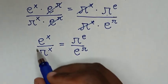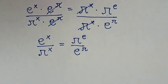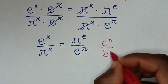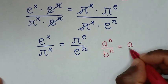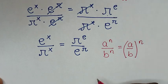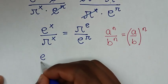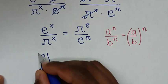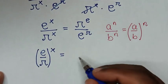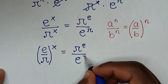In the next step, since e^x and π^x have the same power x, we apply the exponential rule: a^n / b^n = (a/b)^n. So e^x / π^x becomes (e/π)^x, which is equal to π^e / e^π.